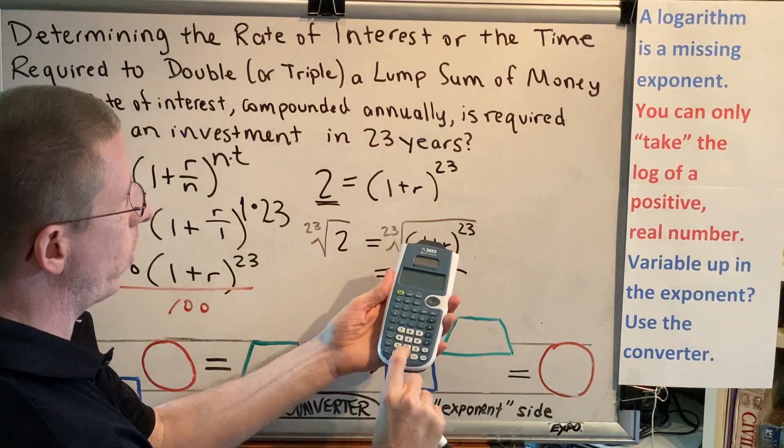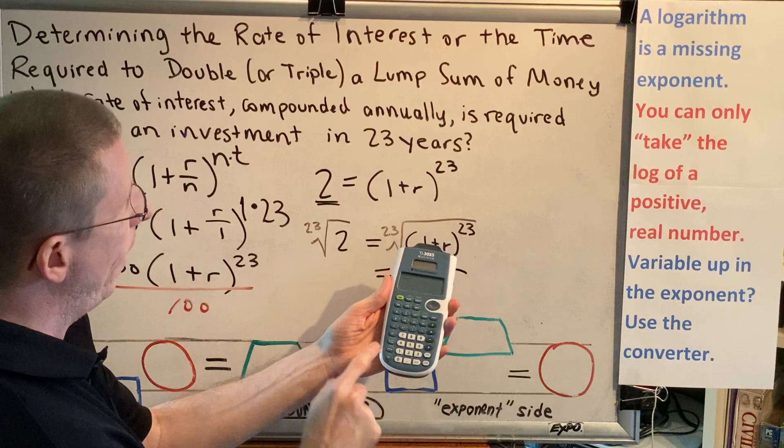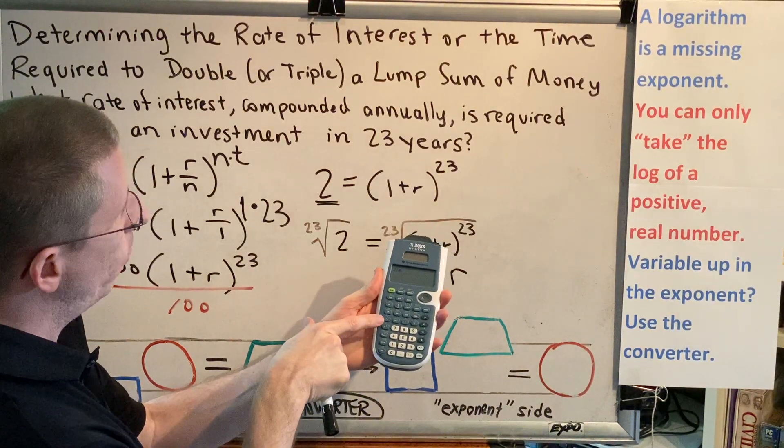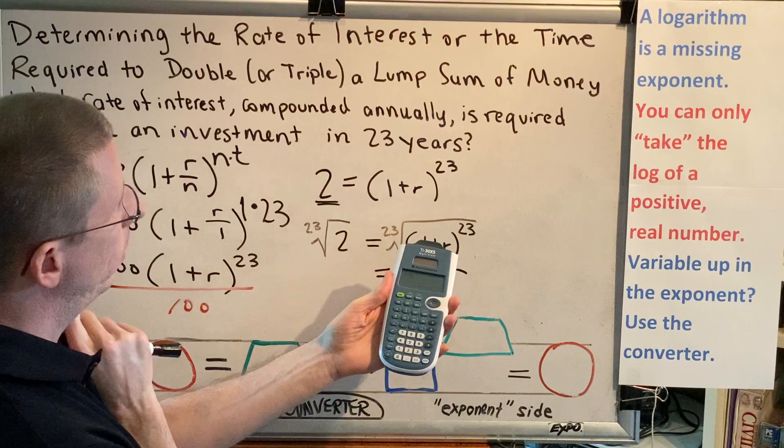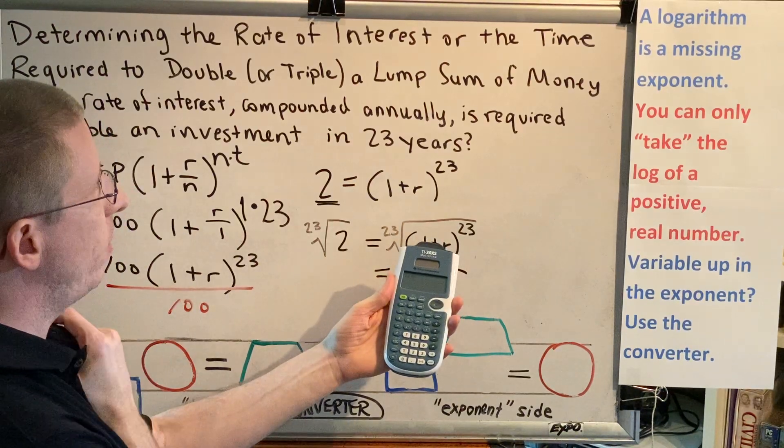So I put in 23. Then we shift, and we get our x root button, and that turns that 23 into the index. In other words, it's raised up and it's small.